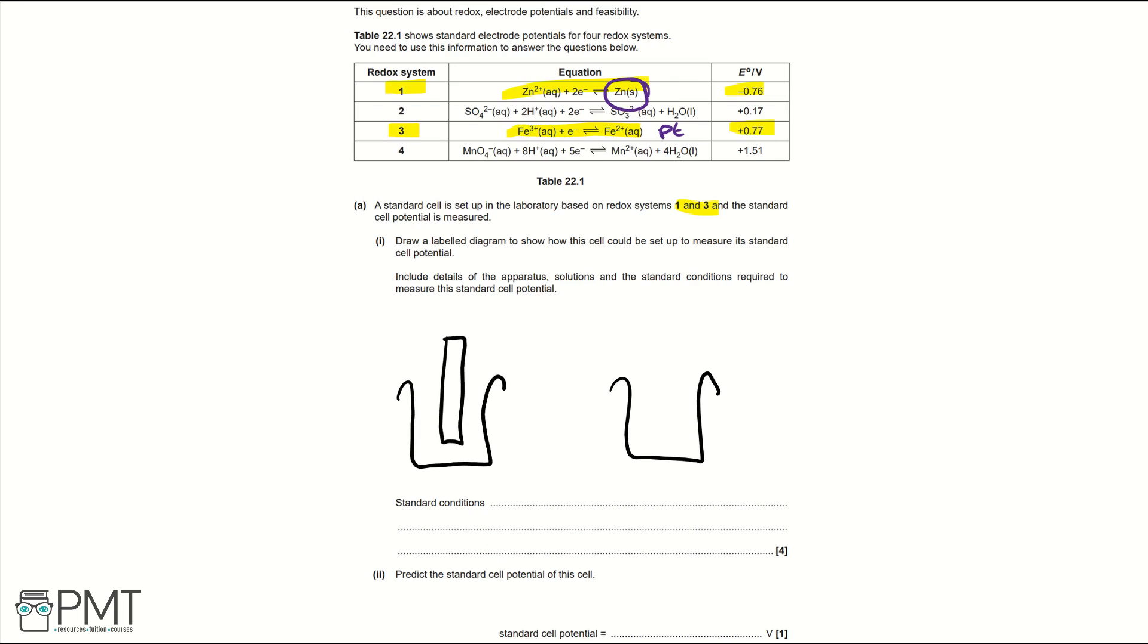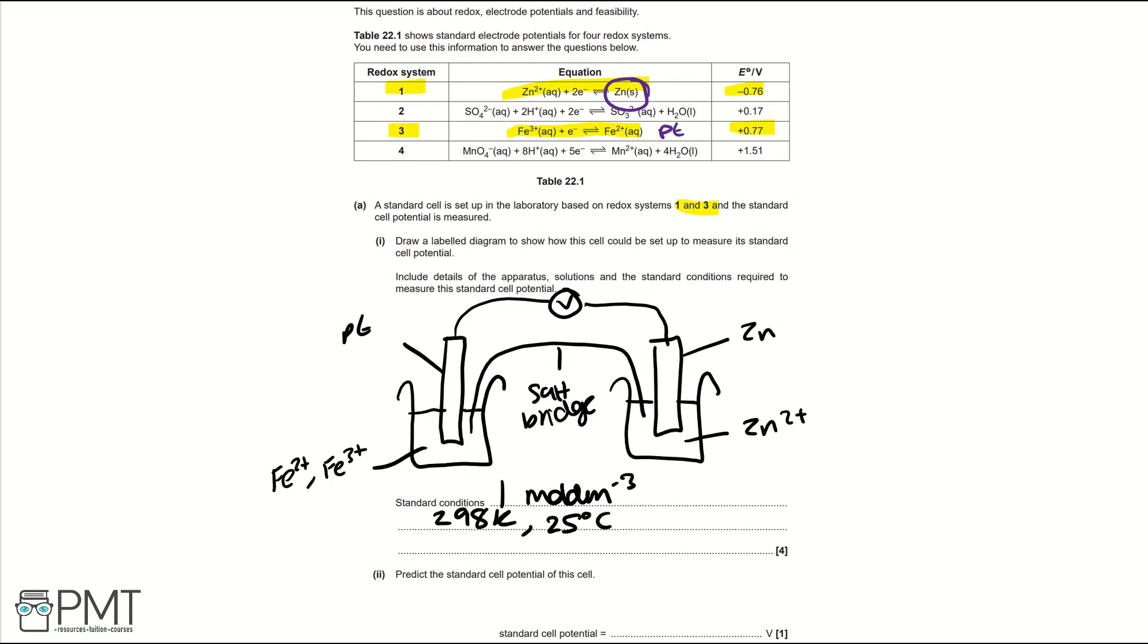We would then have two electrodes and we would have platinum and then iron 2+ and iron 3+ in the solution and on the right we would have a zinc electrode with zinc 2+ ions. We would then have a salt bridge connecting our two electrode cells and then finally a voltmeter between the electrodes. For the standard conditions all solutions are 1 mole per decimetre cubed and it's 298 kelvin and 25 degrees celsius. To get the four marks for this question you get three marks for the correct setup and diagram and then a mark for your standard conditions being correct.